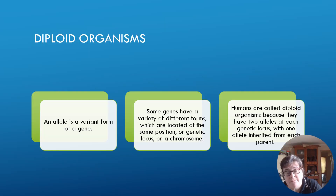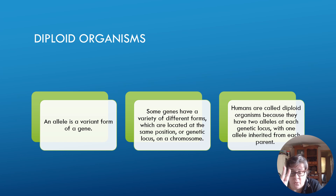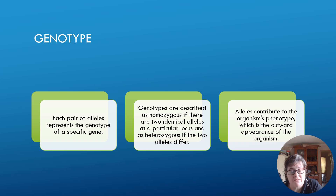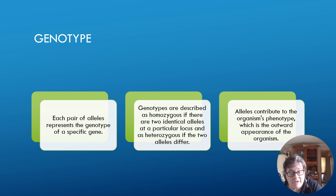We are diploid organisms. An allele of a given gene — some genes have a variety of different forms — is located at the same position, or genetic locus, on the chromosome. Humans are called diploid organisms because we have two alleles at each genetic locus, one allele inherited from each parent. The genotype for each pair of alleles represents the genotype of a specific gene. Genotypes are described as homozygous if there are two identical alleles at a particular locus, and heterozygous if they have two different alleles.